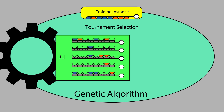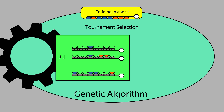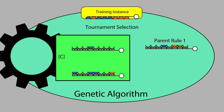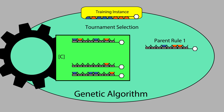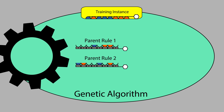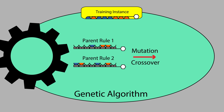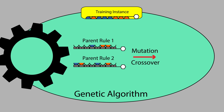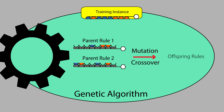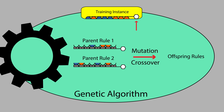Tournament selection randomly selects a portion of classifiers from the correct set, and then deterministically takes the classifier with the highest fitness from this subset to be a parent. New offspring rules emerge from the parent rule templates by applying mutation and crossover, the two most common genetic operators. These operators are typically designed to generate offspring rules that still match the current training instance and retain the correct prediction.